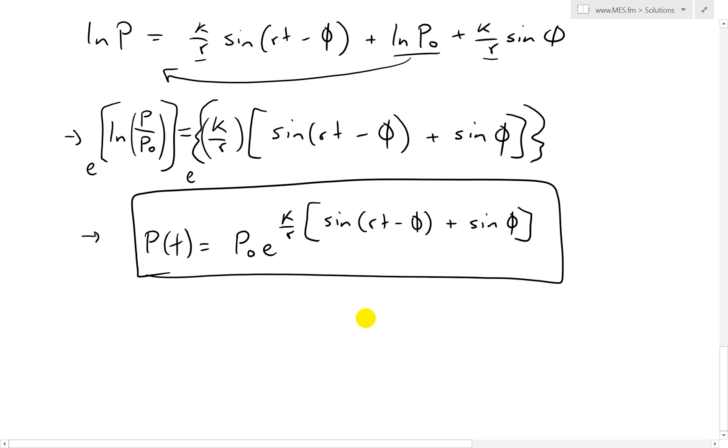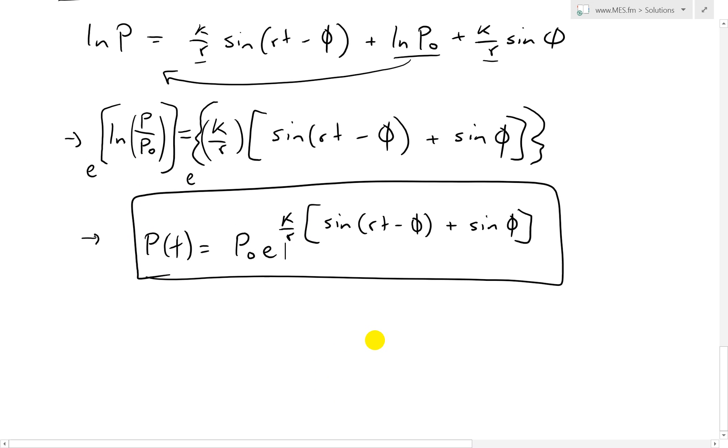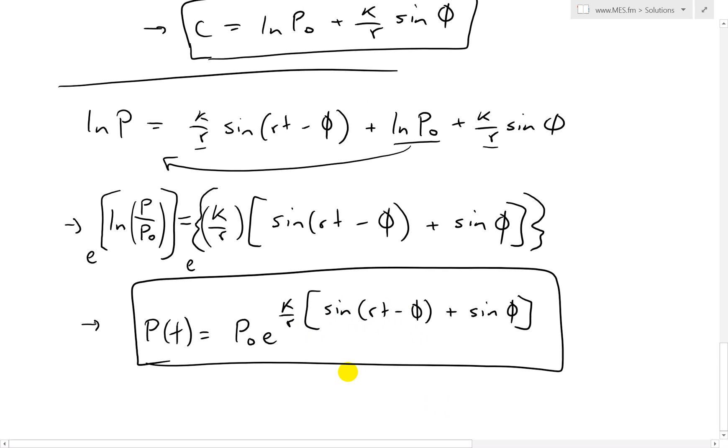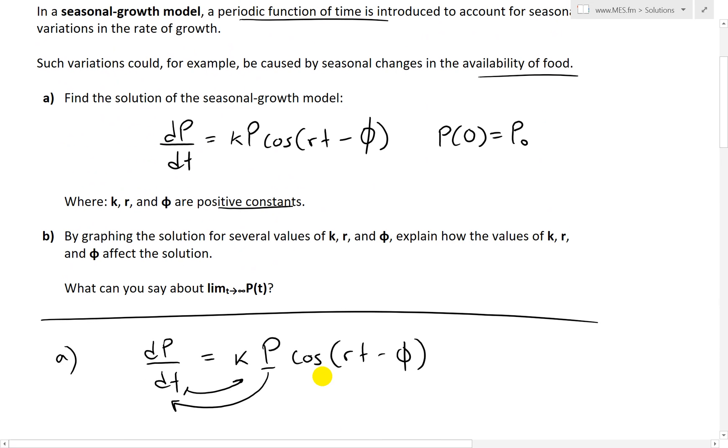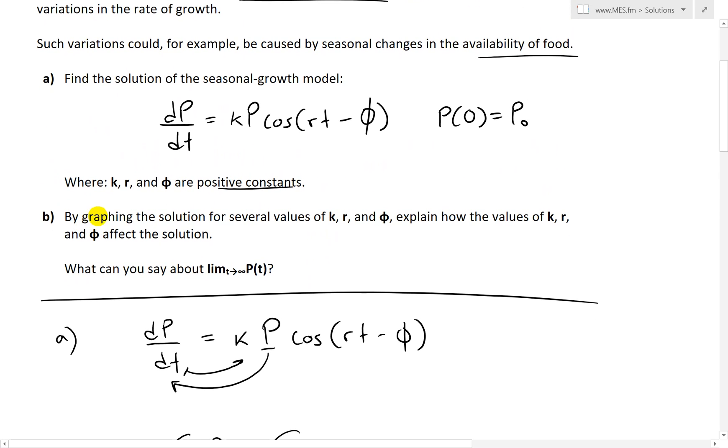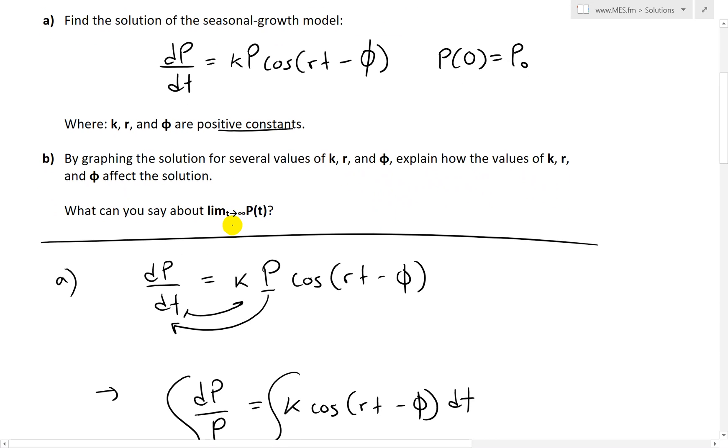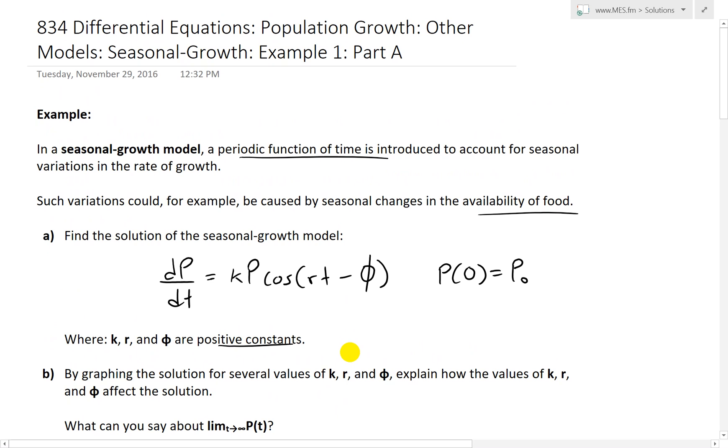Yeah, and that's the solution to that seasonal growth differential equation population growth model. And yeah, so it has this time factor that's periodic, it goes up and down, or it just changes. And yeah, that's all for today. Hopefully you'll follow through. This is a pretty interesting derivation of the solution to it. And in part B, I'll go over, I mean in my next video, I'll do part B, which is going over by graphing. I'll just read it: by graphing the solution for several values of K, R, and phi, explain how the values of K, R, and phi affect the solution. And it says, what can you say about the limit as T approaches infinity of P of T of the population? So yes, stay tuned for that. That'll be interesting as well.